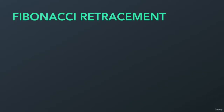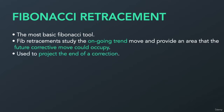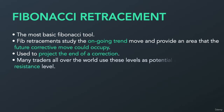Fibonacci Retracement is one of the technical analysis tools that can help us isolate key trading zones. It is the most basic Fibonacci tool. Fib retracement studies the ongoing trend move and provides an area that the future corrective move could occupy. It is used to project the end of a correction, and many traders all over the world use these levels as potential support and resistance.